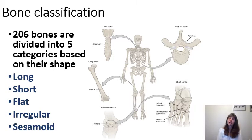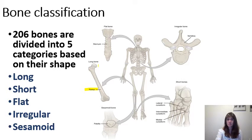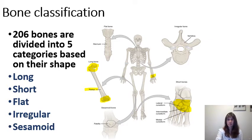We have 206 bones in our body, categorized into five different shapes. Long bones, such as the femur, are characterized by having a long shaft with expanded ends. We also have short bones, such as the tarsal bones in the foot and the carpal bones in the wrist. Flat bones, such as the sternum, have a very flat feel to them. If you've ever felt one of the plastic rib bones in lab, you'll feel that it feels flat.